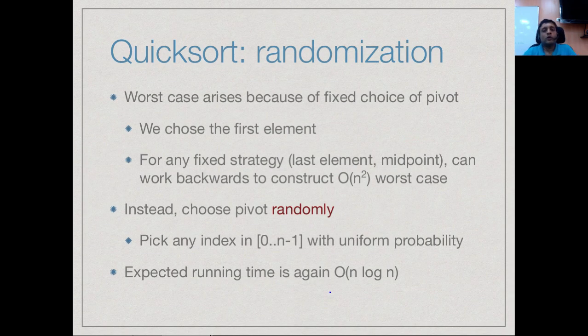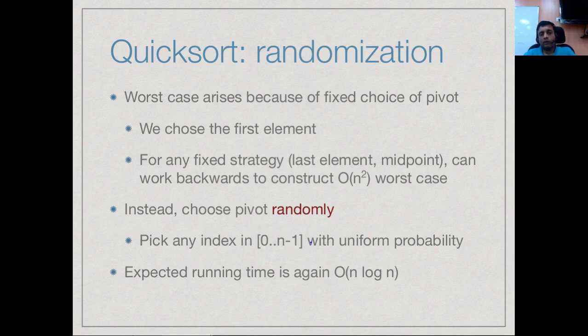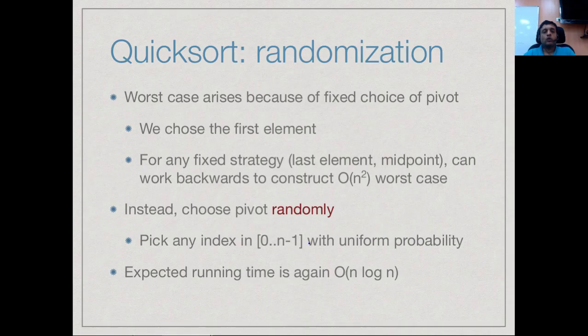You can actually exploit this average case behavior in a very simple manner. Why does this worst case occur? The worst case occurs because the pivot that we choose could be a bad pivot. As we saw, if you took the first element as your pivot, then a sorted array becomes a worst case because every time the pivot is the extreme element.